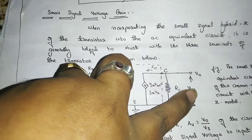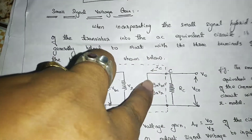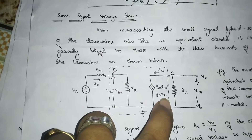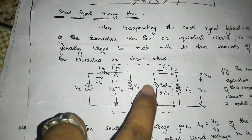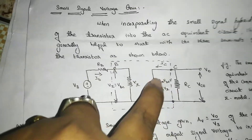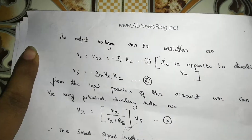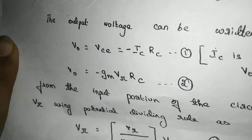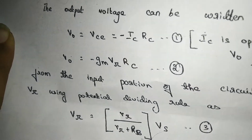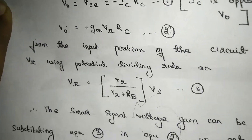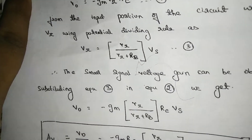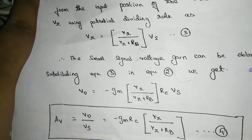V0 is equal to Vc, Vc is equal to Ic into RC, Ic is equal to Gm into Vpi. Vpi will contribute to total voltage, same resistance, divided by total resistance. So, V0 is equal to minus IC into RC, which is minus Gm into Vpi into RC. Vpi is equal to total voltage into same resistance divided by total resistance. So finally, Av is equal to V0 by Vs. Vs cancels, and you get the final answer.